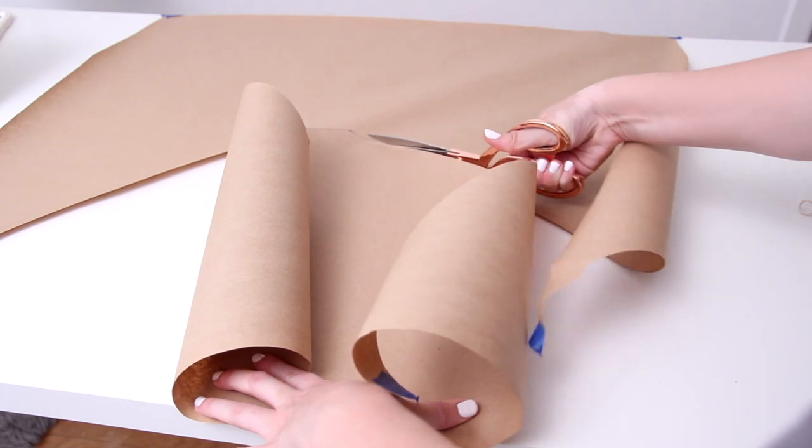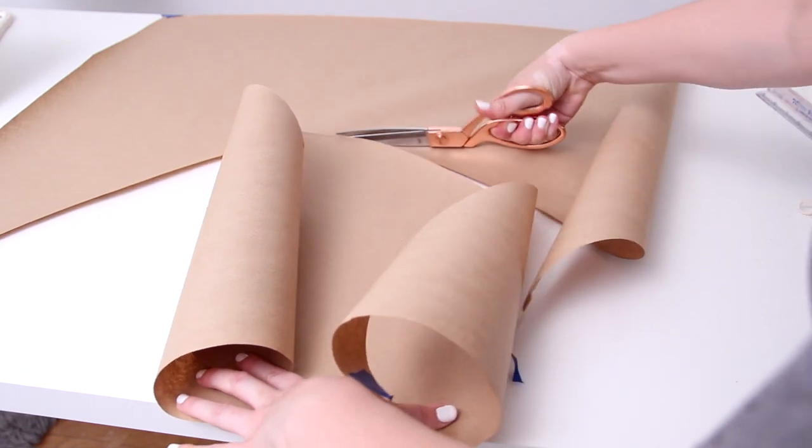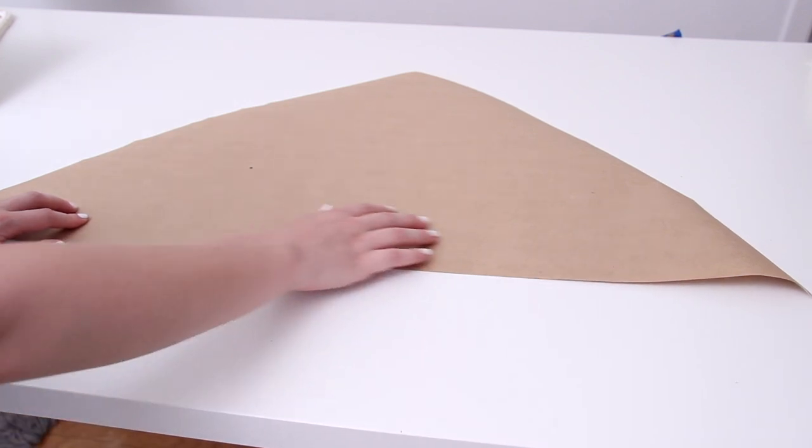Then I took my scissors and just cut that out and you'll see you have a bit of a dome slash triangle shape. It's a little bit pointed at the top.